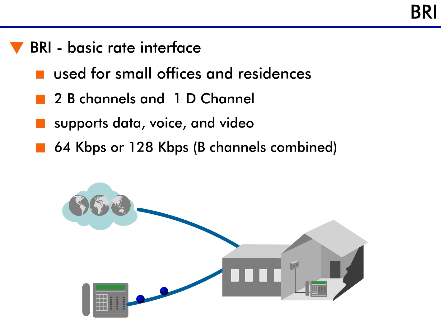This capability allows data, voice, and even video communication to use the connection at the same time. Separately, the B-channels offer 64 kilobits per second of information. Together, they provide 128 kilobits of bandwidth.